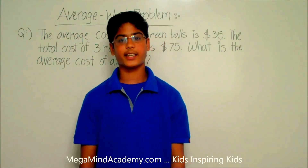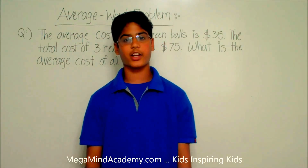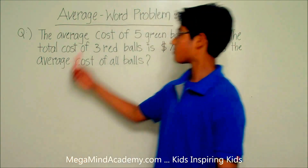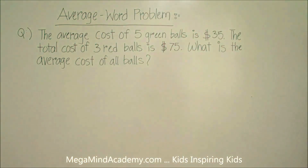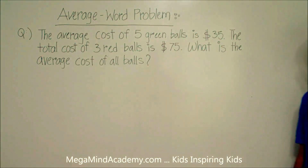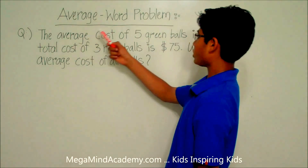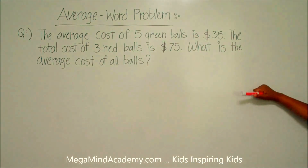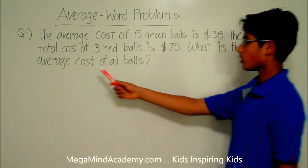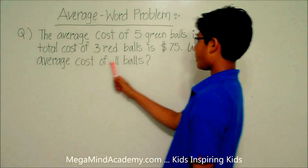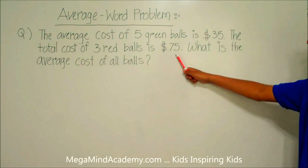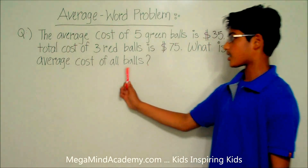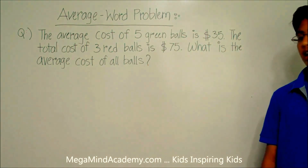Hi! Today we're going to learn about average word problems. Let's say we have a problem like: the average cost of five green balls is $35. The total cost of three red balls is $75. What is the average cost of all balls?